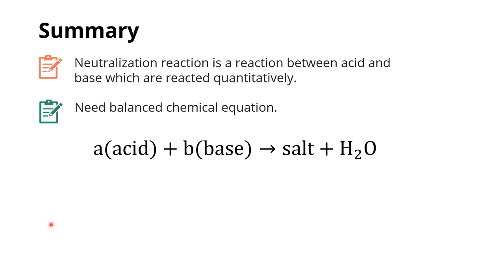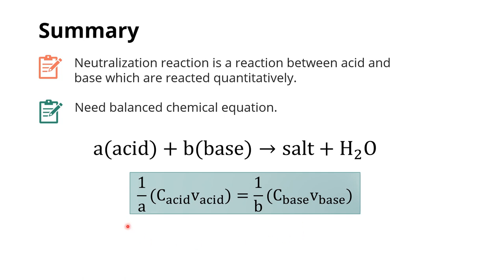Summary of this video: we learned about neutralization reaction, which is a reaction when acid and base react quantitatively. We can find the amount of acid and base from the balanced chemical equation — A moles of acid react with B moles of base to produce corresponding salt and water. The stoichiometry coefficient is very important: the number of moles of acid is equivalent to the number of moles of base according to the stoichiometry coefficient. Find more exercises to practice on your own, and see you on the next lesson. Sawaddee kha.